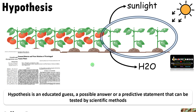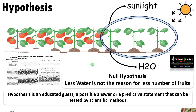Hypothesis is an educated guess, a possible answer, a predictive statement that can be scientifically testable. There are two types of hypothesis. The first one is null hypothesis and the second one is alternative hypothesis. Null hypothesis is the hypothesis that the researcher tries to disprove, or it states that there is no statistical significance between the variables selected.